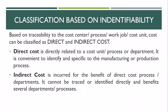Whenever you incur a cost that can be directly associated with a specific process, a specific department, or a specific cost unit, that is called a direct cost. Any cost which you cannot directly associate is called an indirect cost. Based on traceability, we have two classifications: direct cost and indirect cost. An example — at lunchtime, mummy decides to make chicken curry at home.